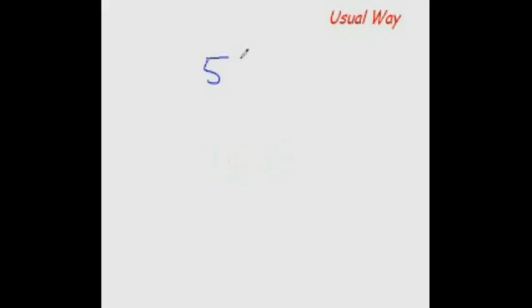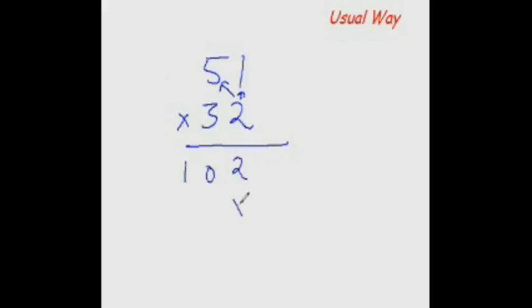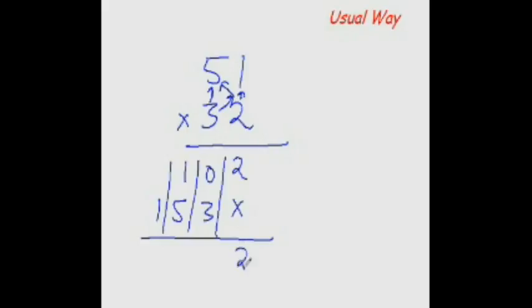The usual way of multiplying any 2-digit number with any other 2-digit number is: 2 times 1 is 2, 2 times 5 is 10. Now 3 times 1 is 3 and 3 times 5 is 15. Add all the numbers in the column, and you get 2, 3, 6, 1 — giving you the answer 1632.